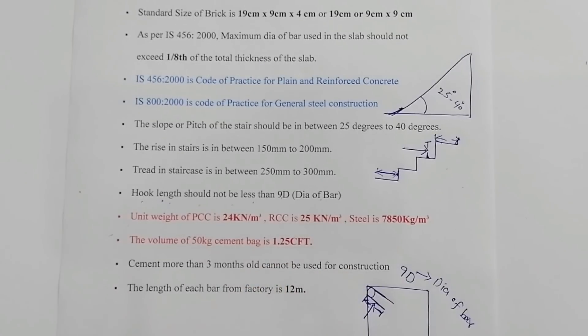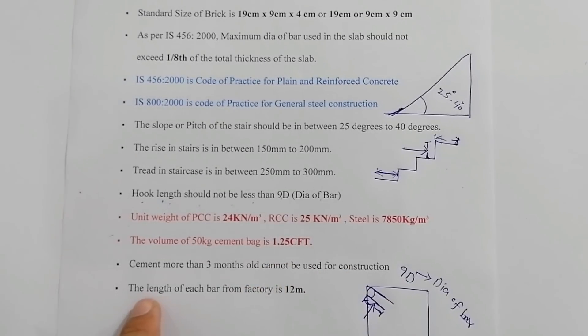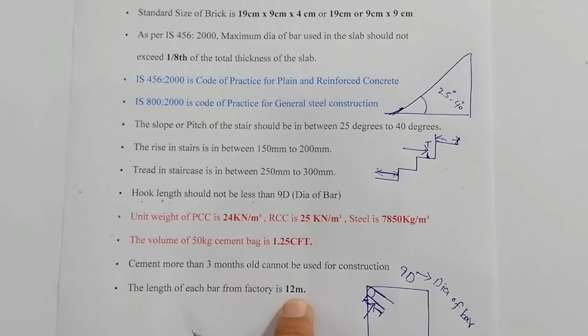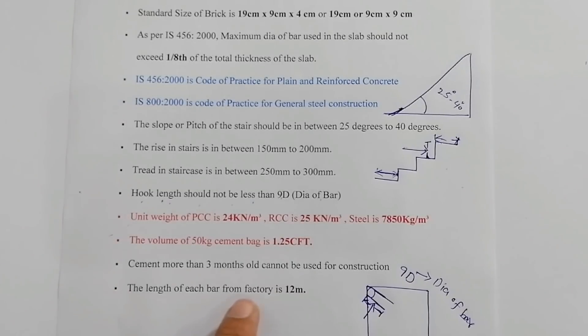The length of each bar from factory is 12 meter, or the standard length of steel bar is 12 meter from factory.